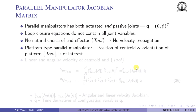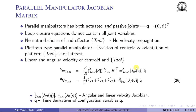In a platform-type parallel manipulator like the Stewart platform or the 3RPS manipulator, the position of the centroid and the orientation of the platform are of interest. So we need to find the linear and angular velocity of the centroid of the top platform. Given the orientation of the top platform, the angular velocity of the coordinate system can be obtained as R-dot times R-transpose — the space-fixed angular velocity vector.